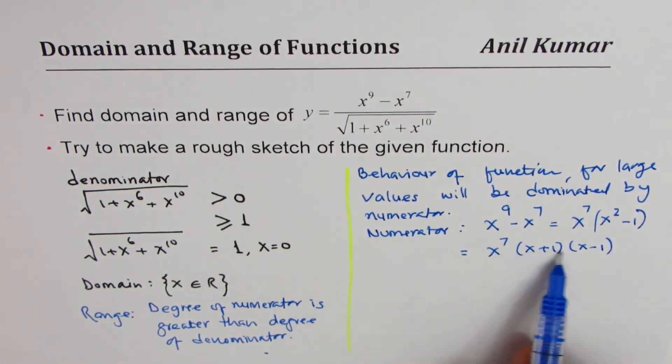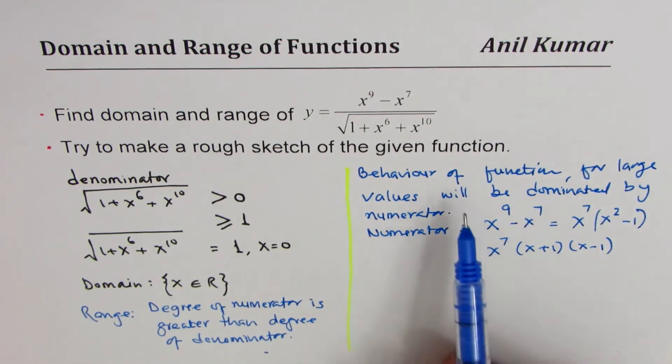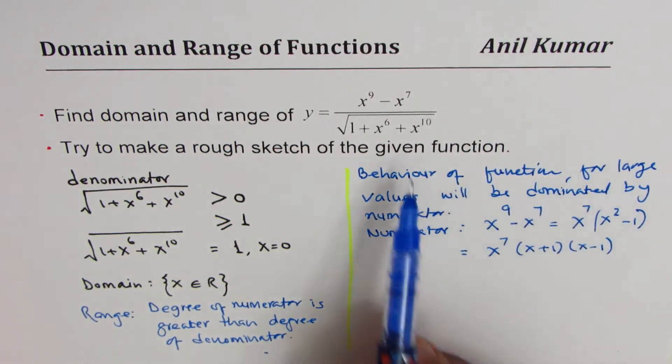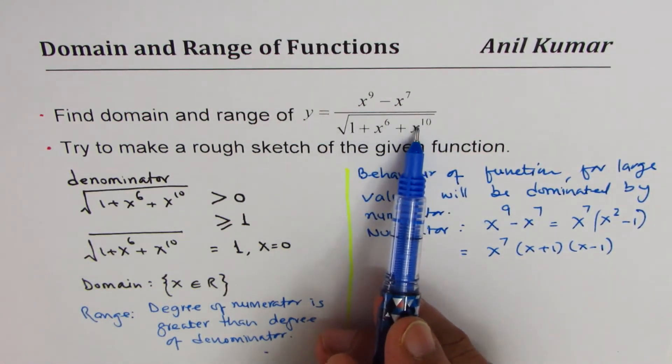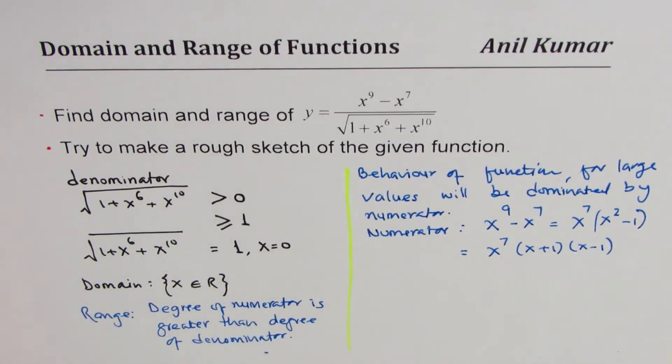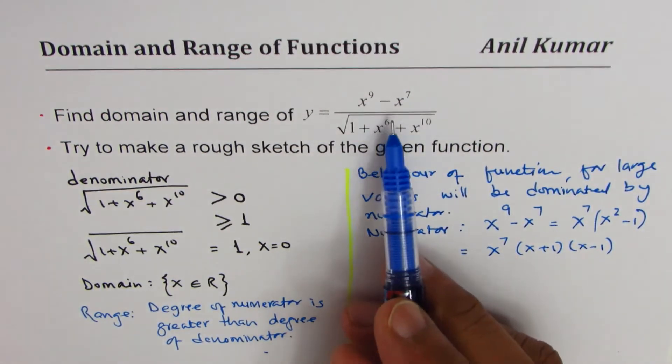So that gives you three zeros. This information is going to help us to make a rough sketch. Now, behavior of the function is more like that of the numerator. Numerator is an odd polynomial, degree of numerator is much much higher, x to the power of 9. Here it is half of 10 which is 5. So what do we conclude from here?